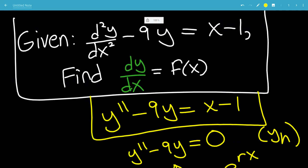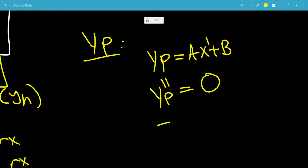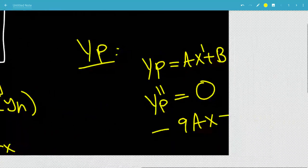So we have 0 minus 9 times y. So we have minus 9ax minus 9b, and that's equal to x minus 1.